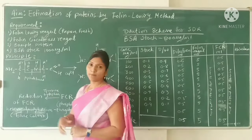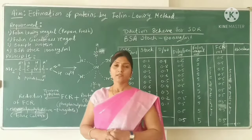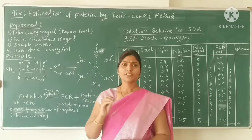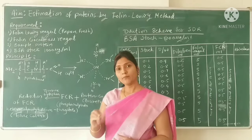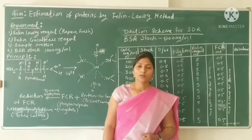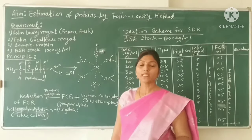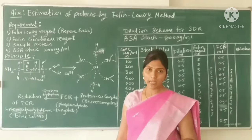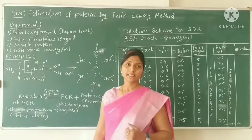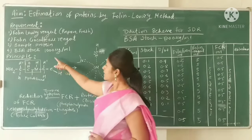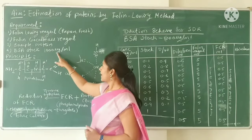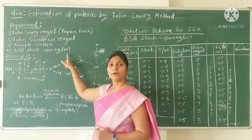We also need the sample protein — that is, any sample from which you want to estimate the protein content. Additionally, we need BSA stock, where BSA stands for bovine serum albumin. We will use BSA as our standard protein, and we will prepare a stock of 1000 micrograms per ml.